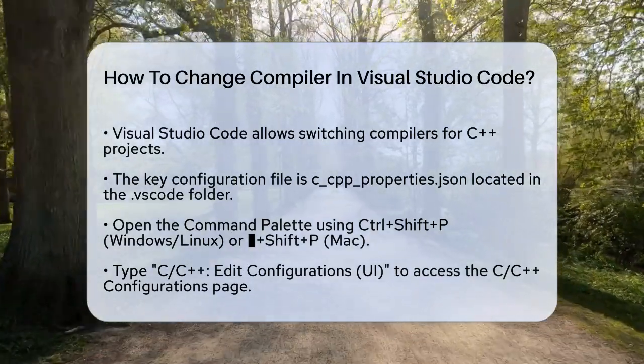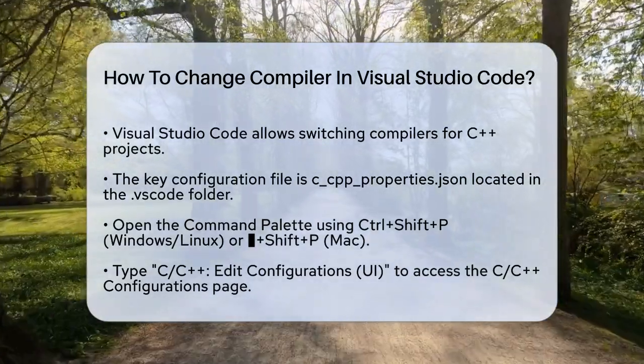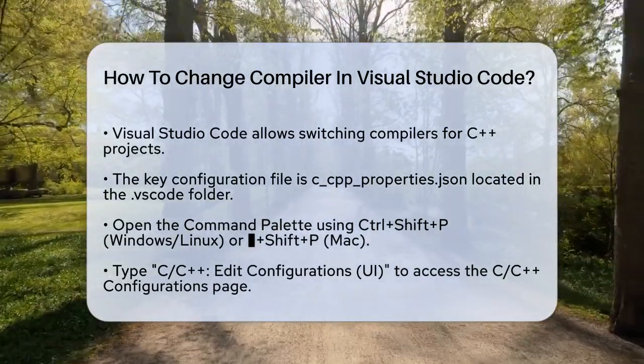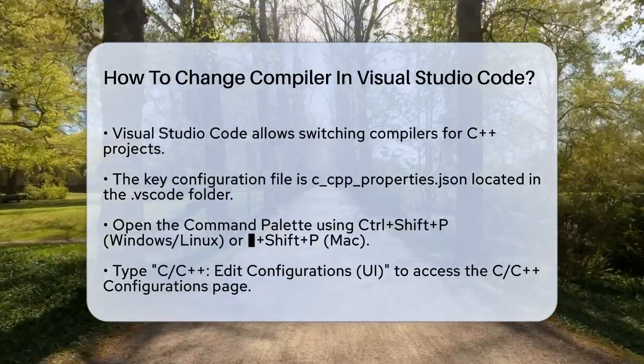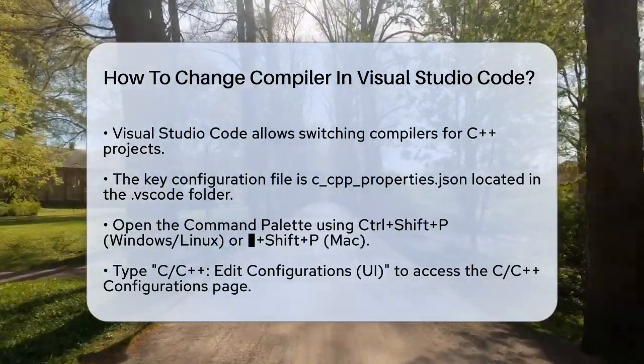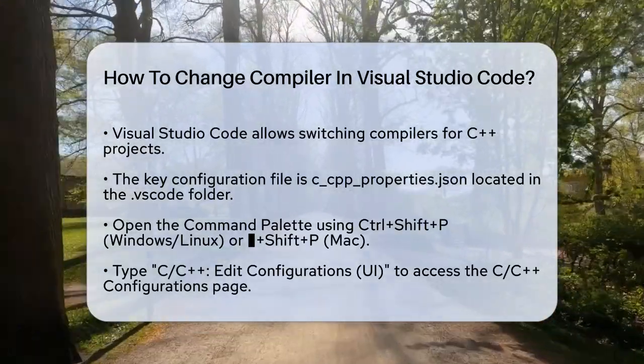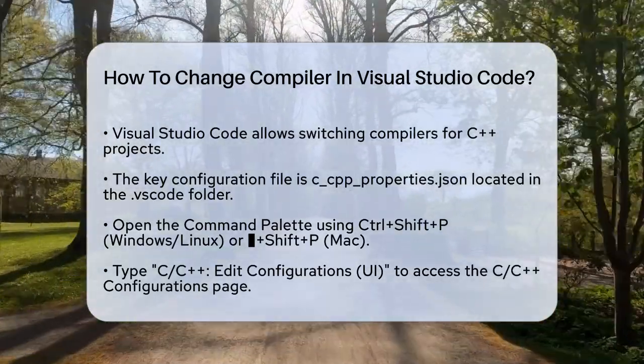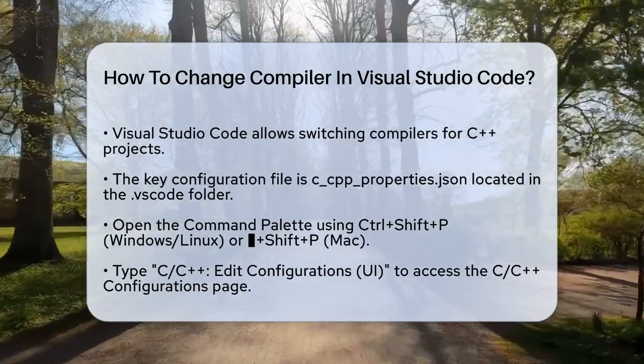To change the compiler, you can start by opening the command palette in VS Code. On Windows or Linux, you can do this by pressing Ctrl+Shift+P, and on a Mac, it's Cmd+Shift+P.